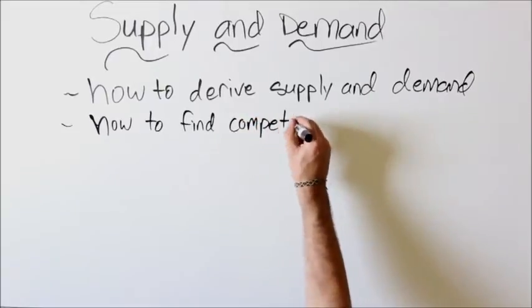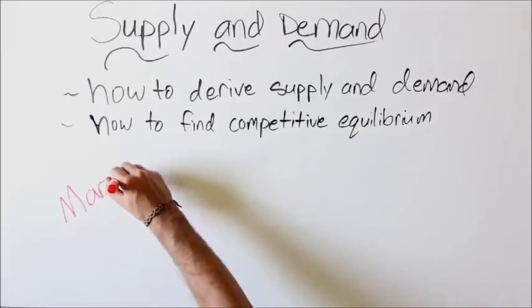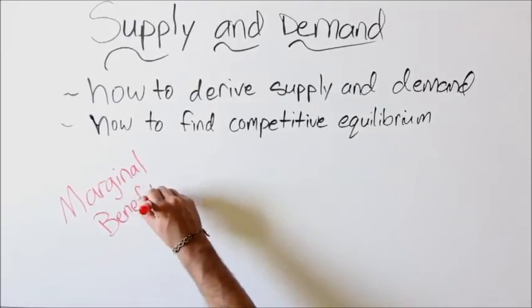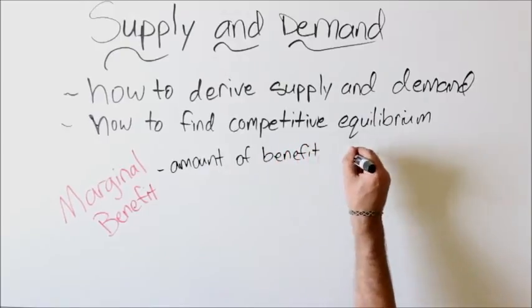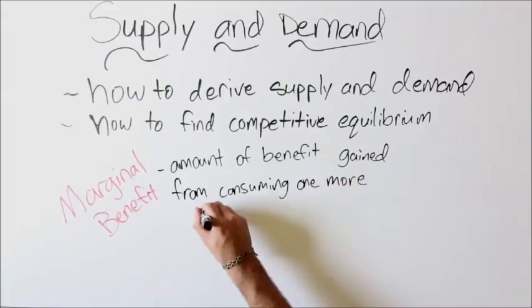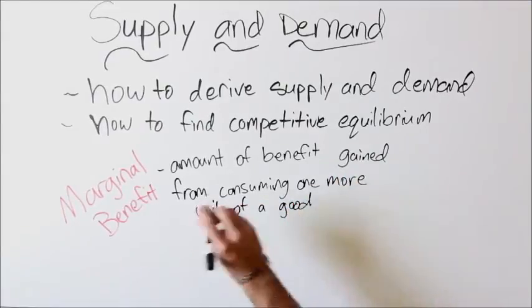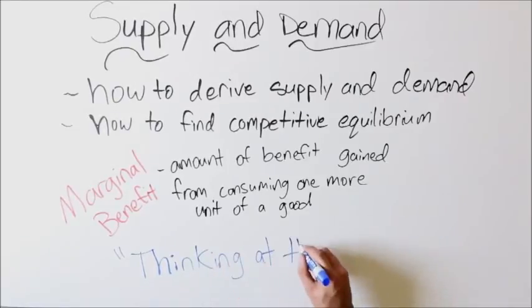Before we begin, we need to introduce and define what marginal benefit is. Marginal benefit is the amount of benefit gained from consuming one more unit of the good. Economists often try to figure out what happens when something changes by one unit. This is important because it allows you to consider changes in the additional benefit you get from each unit so that you can optimize your benefit. They call this thinking at the margin.